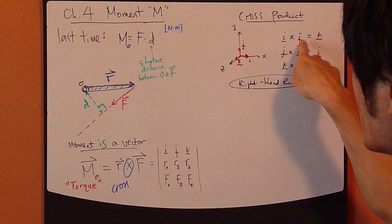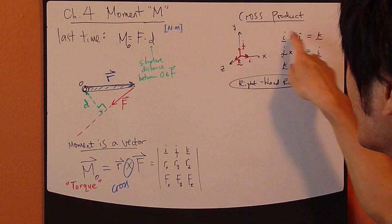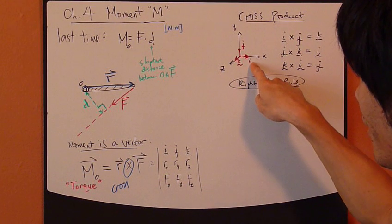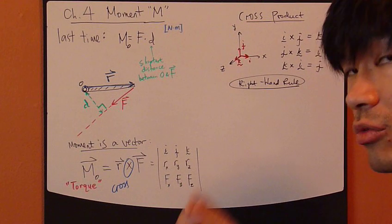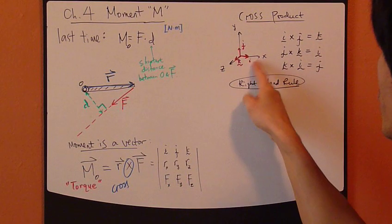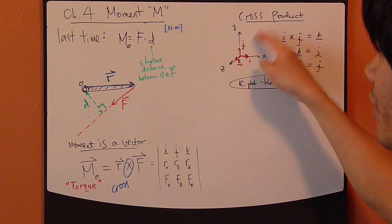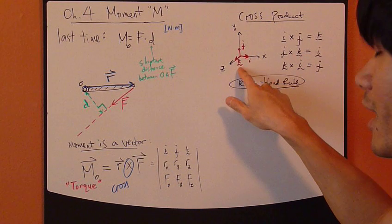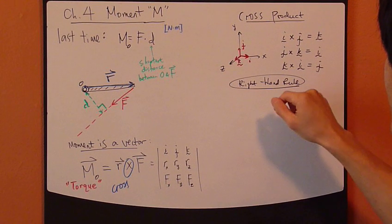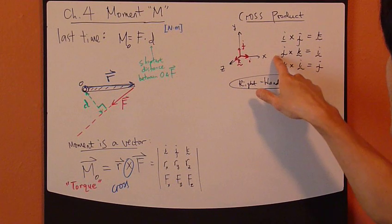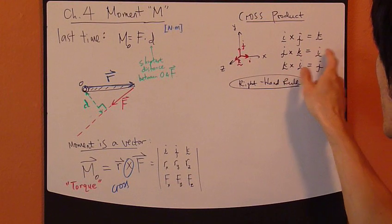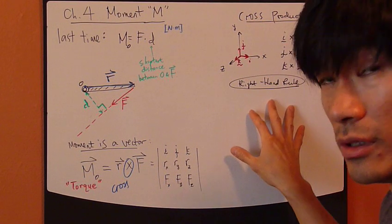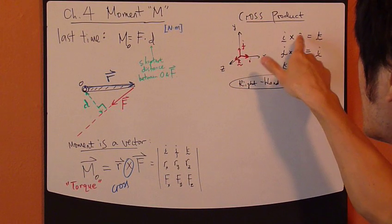And I cross it with J, this one right here, it gives you K. So this I vector, unit vector, having a magnitude of one in the X direction, cross it with J unit vector, it gives you another vector, a third vector. It's exactly K vector. And same thing, you keep going, J vector, cross it with K, it gives you I vector. So basically, this cross product follows right-hand rule.